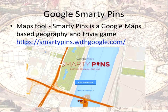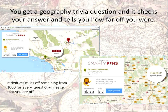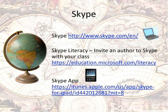Google also has something really fun for those smarty kids who finish early — it's called Google Smarty Pins. It's a Google map-based geography and trivia game. You start out with 1,000 miles and get a trivia question. When you respond with what you think the geographical answer is, it deducts from your mileage how many miles off you were. So if you said something happened in Sydney, Australia, and it really happened 100 miles away, it deducts that 100 miles. You continue playing until you run out of miles. It's a cool little activity.